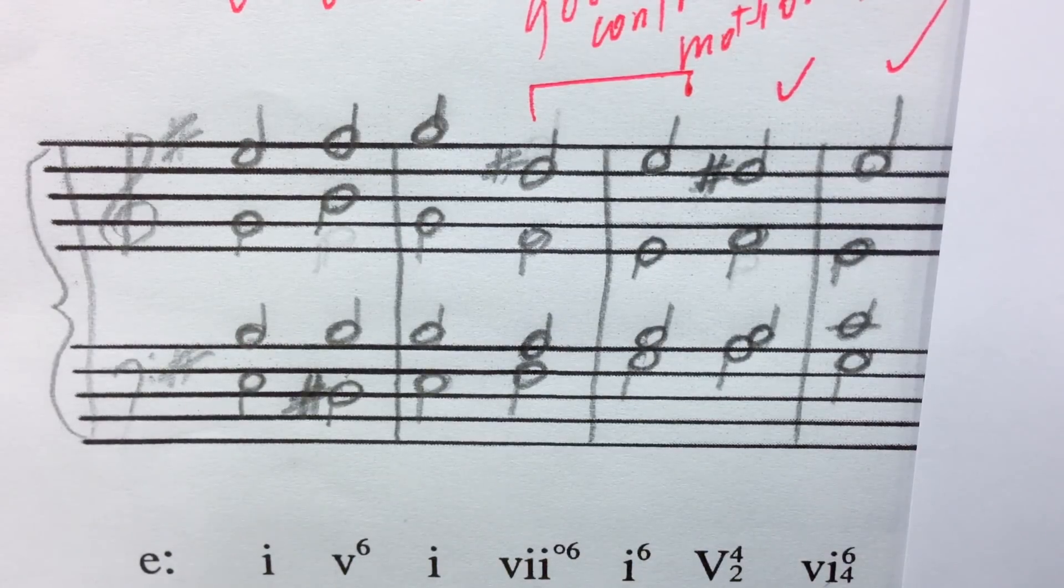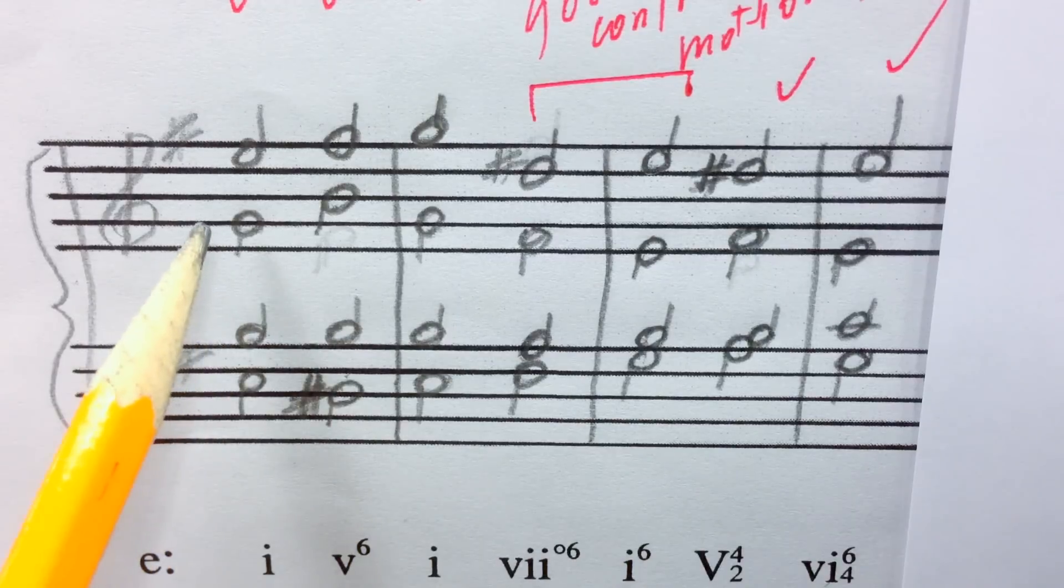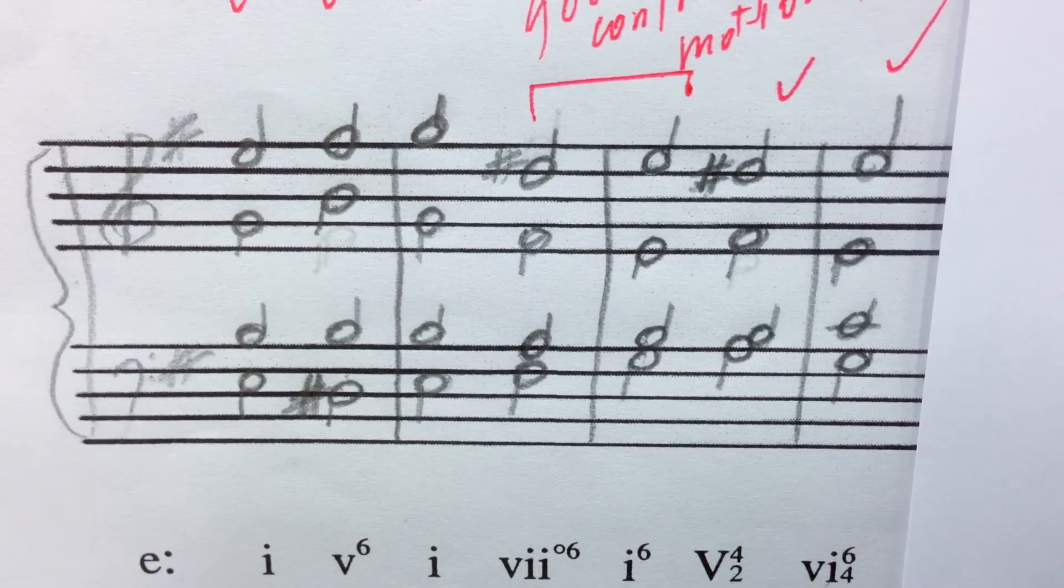Notice how there isn't more than an octave between any of the upper parts. So between tenor and alto, there isn't more than an octave. Between alto and soprano, there isn't more than an octave. Try to maintain that rule.